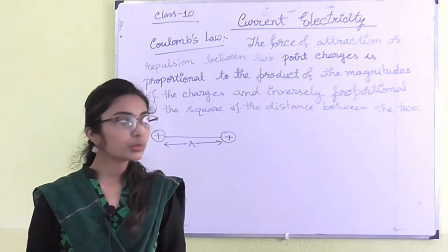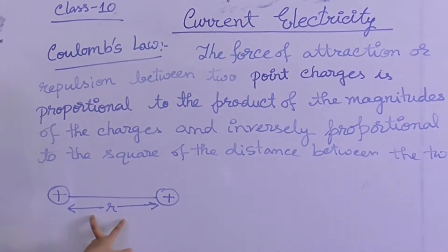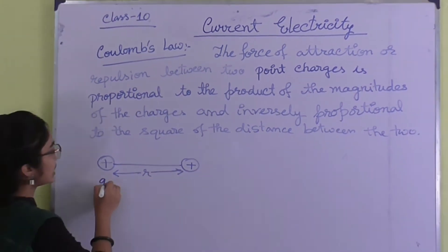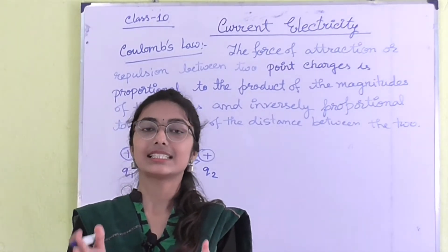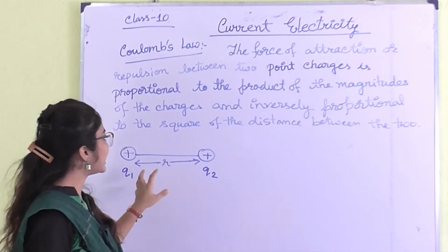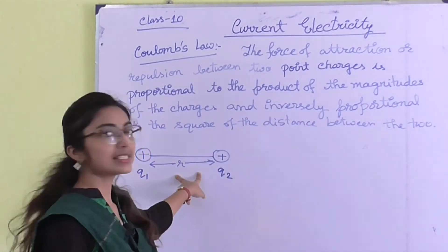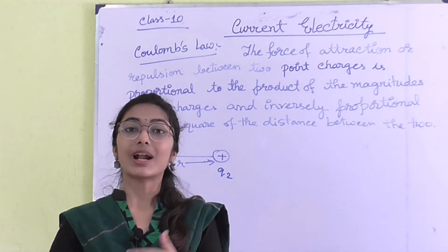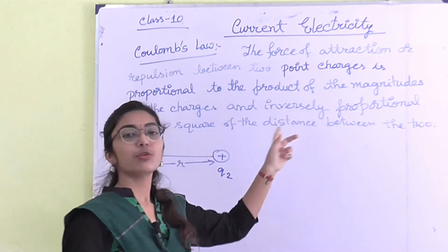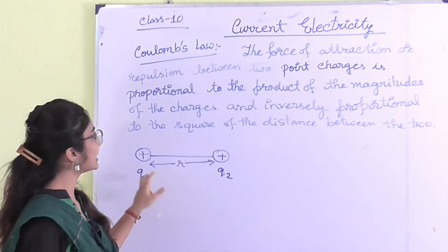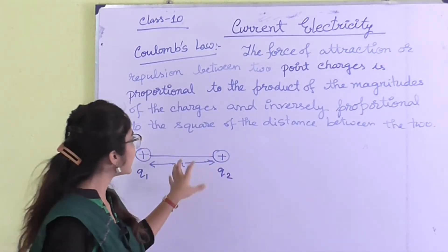Now, Coulomb's law. When two similar charges or two opposite charges are kept at a distance of r meters — suppose one charge is Q1 and another is Q2 — two opposite charges attract each other and two same charges repel each other. According to Coulomb's law, the force of attraction or repulsion between two point charges is proportional to the product of the magnitude of the charges and inversely proportional to the square of the distance between them.